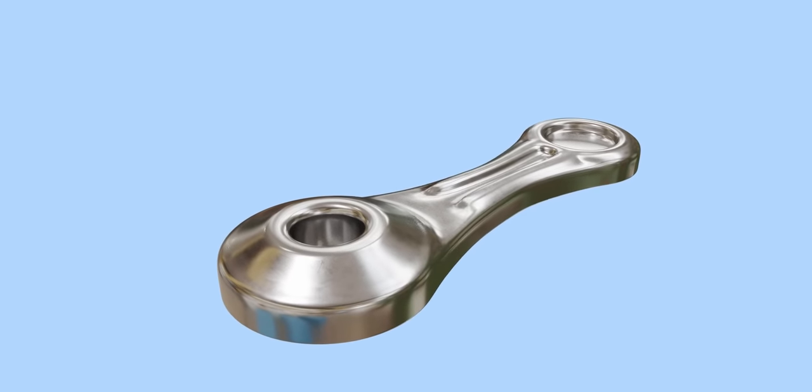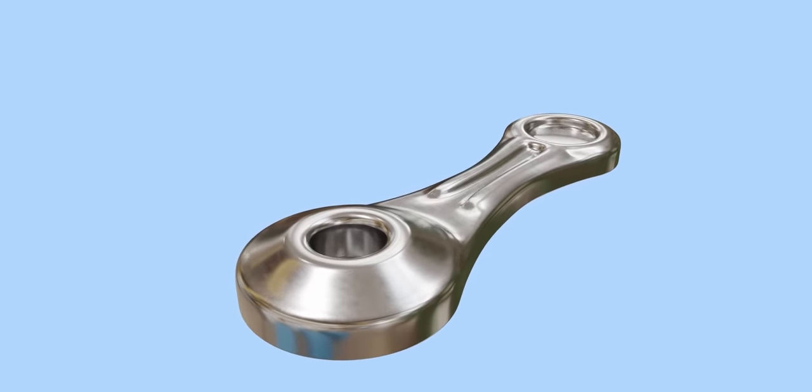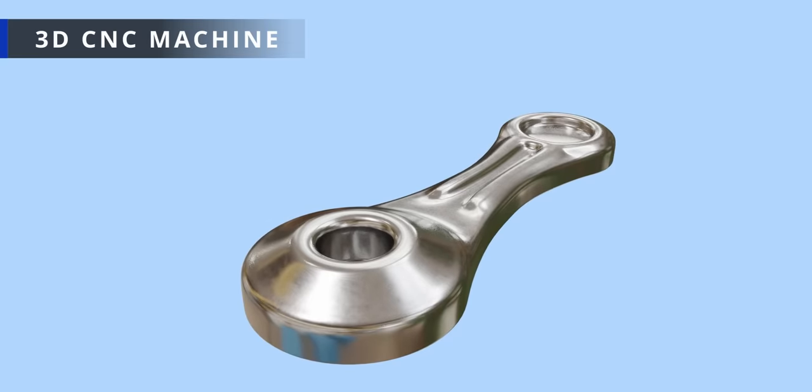What about this shape where the depth varies gradually? This requires the tool to move in the Z-direction along with X and Y movements. This is an example of 3D machining.